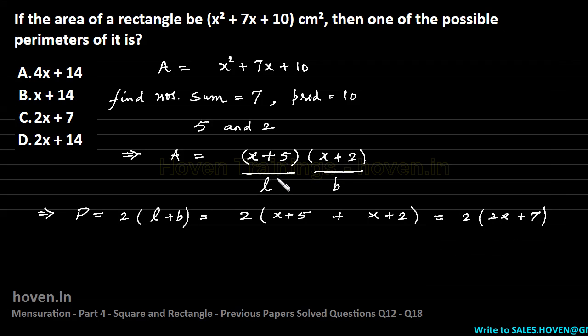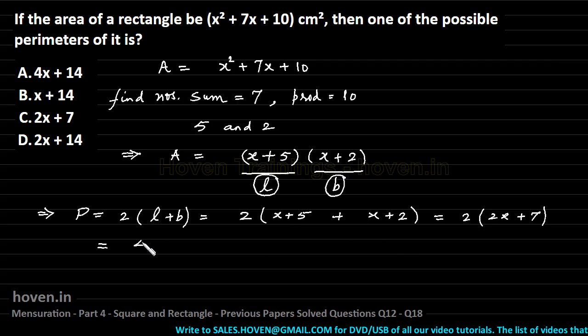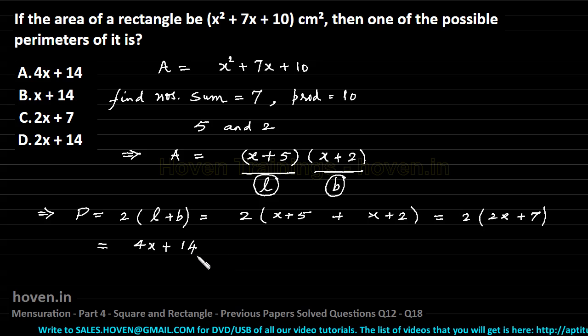I am just circling this one so that nobody gets confused with this that it is a fraction. So this is the perimeter which we can immediately write as 4x plus 14 and therefore we now have to look in the choices. The first choice is the obvious answer.